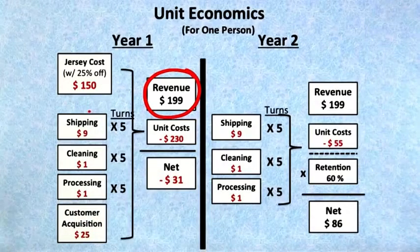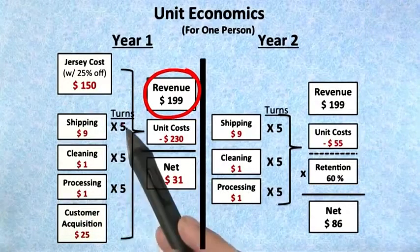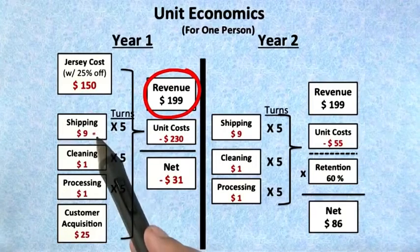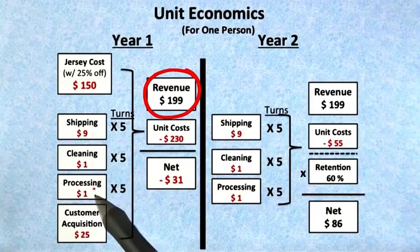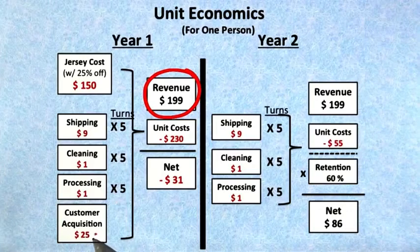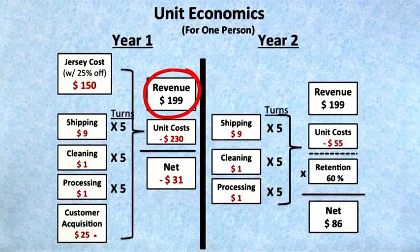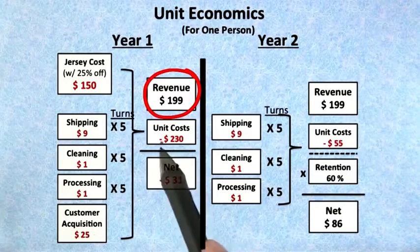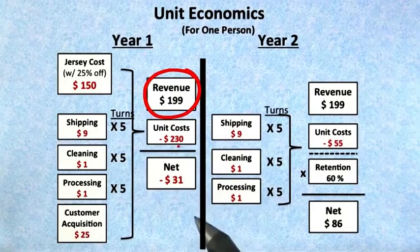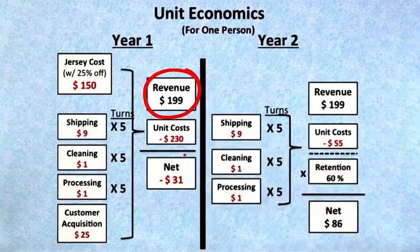They think they'll be able to rent it five times during the year. Their shipping cost was about $9, cleaning cost $1, processing cost $1, and customer acquisition and activation cost $25 a team. So if you take a look at their unit cost and add all this up, it's $230, but their revenue was only $199.